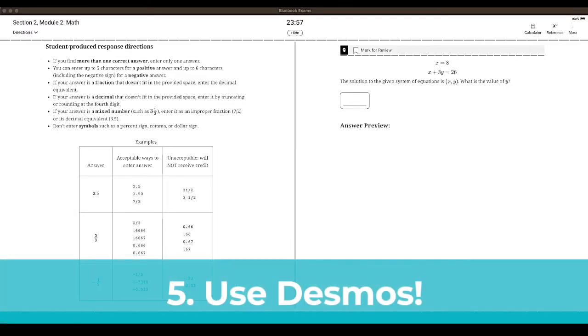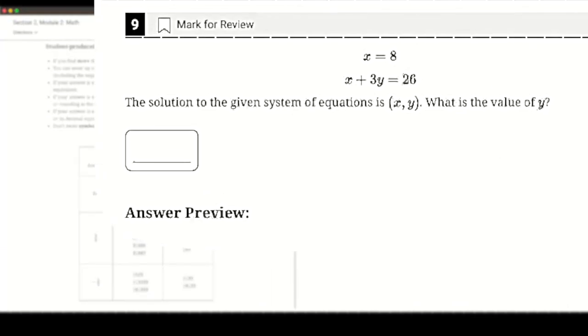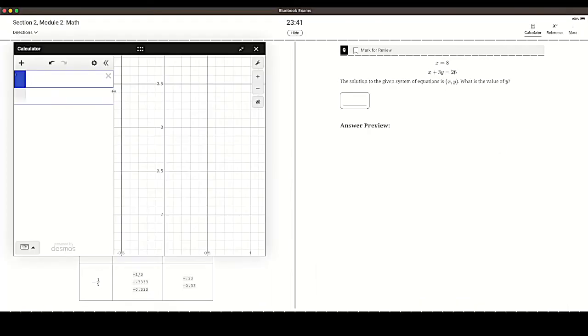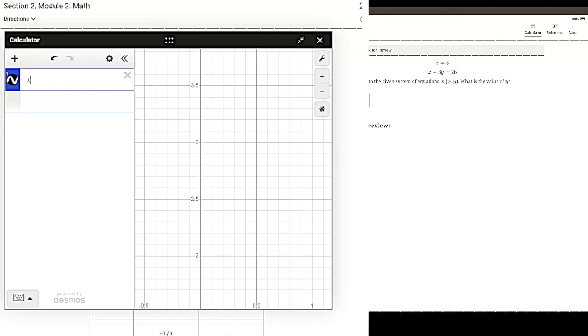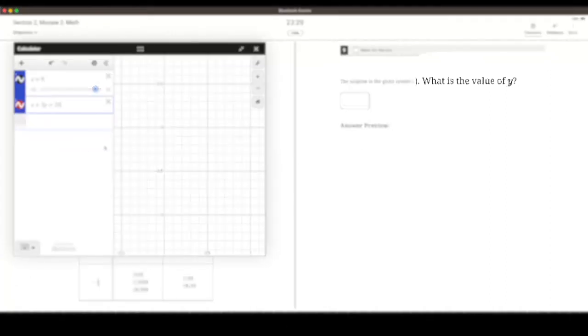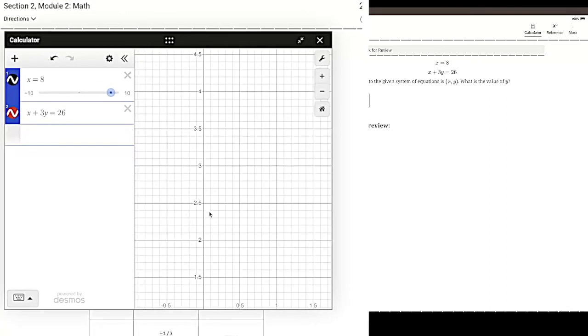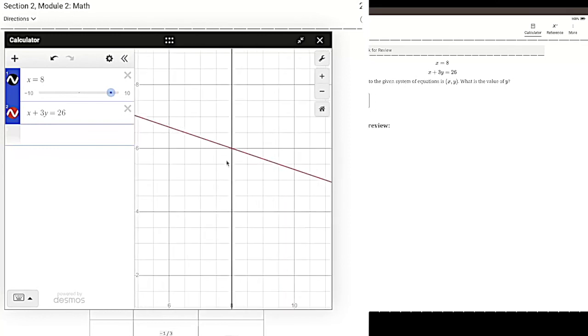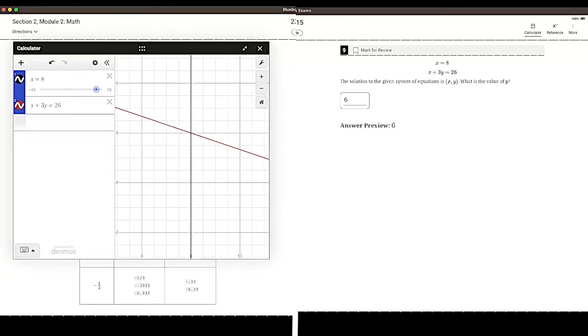And our last time-saving trick is to use Desmos. Utilize Desmos. If I've got a system of equations, for example, pull up Desmos. I'm going to plug in X equals 8. X plus 3Y equals 26. It's asking for the value of Y in my solution. Zoom out here. Find my solution. The value of Y is 6. And of course, this is just scratching the surface of what Desmos can do to help you save time.